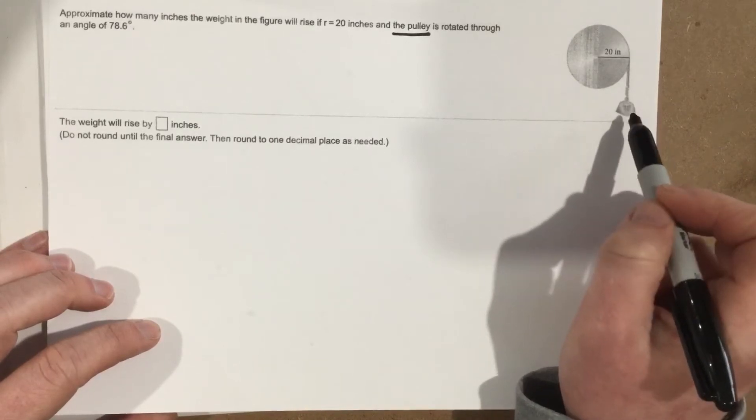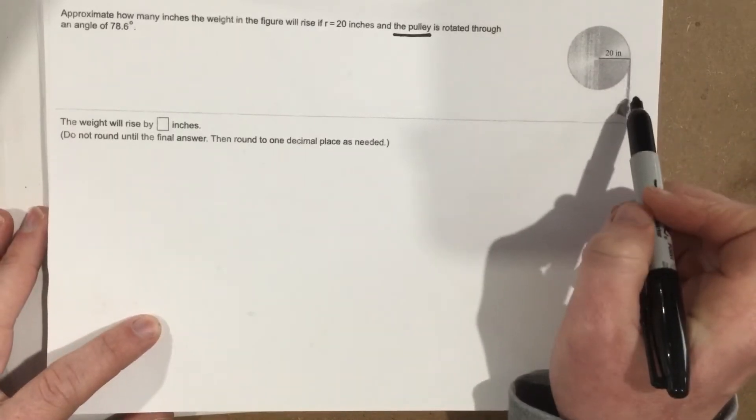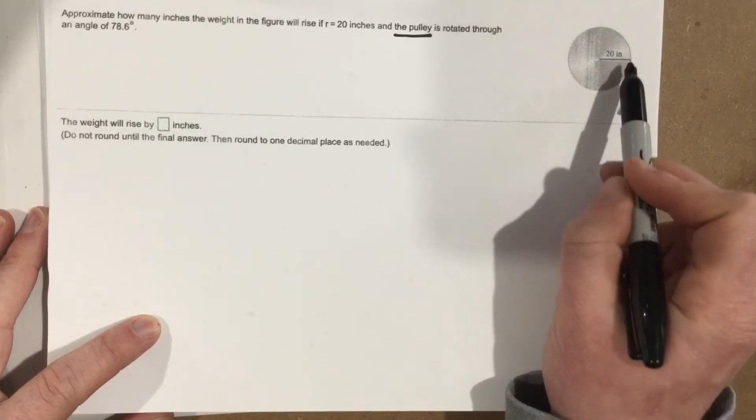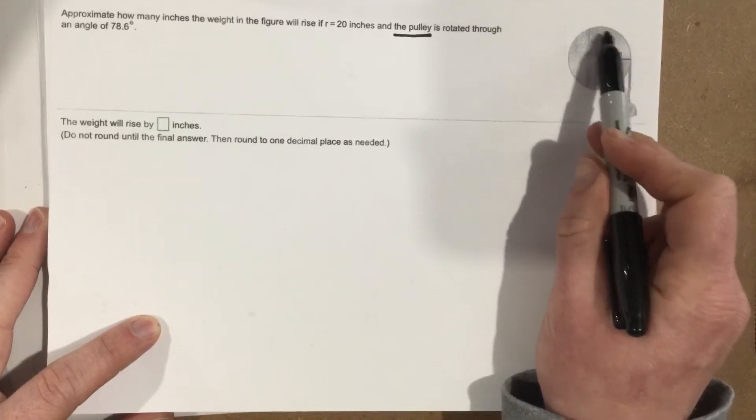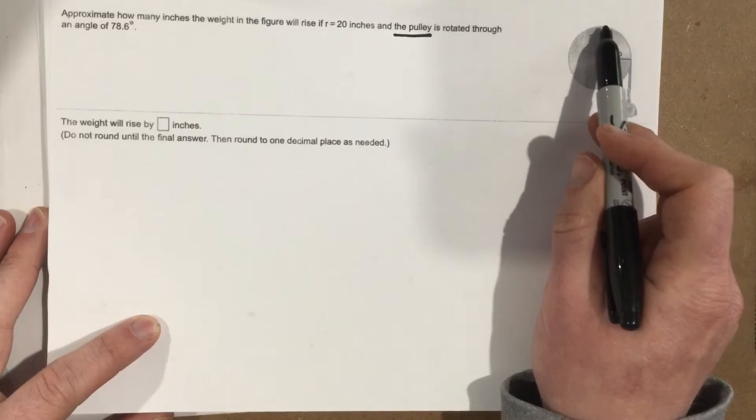If you know that, this problem is super easy because if the weight is moving up the same distance the rope travels around the circle, traveling around the circle is the arc length formula.